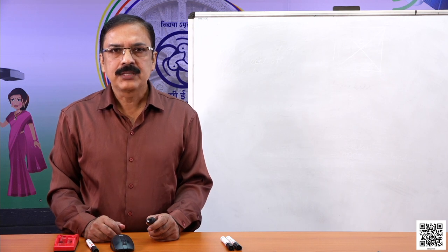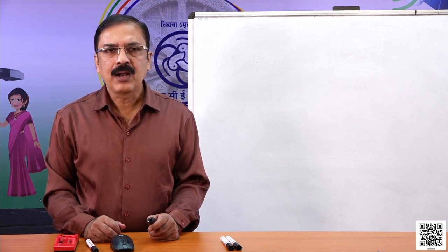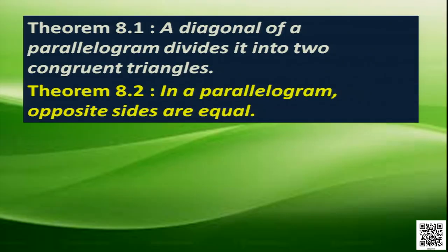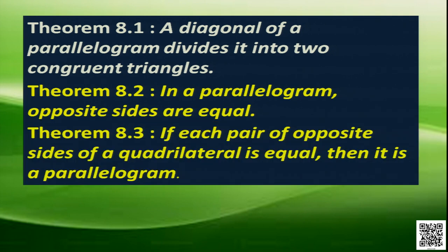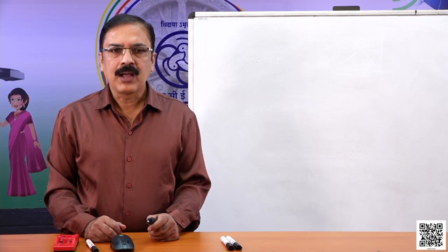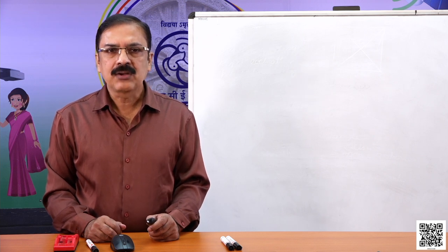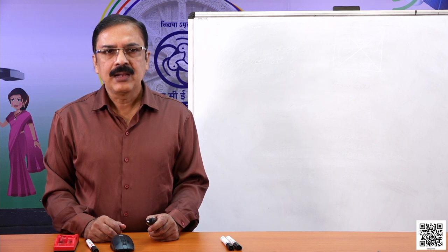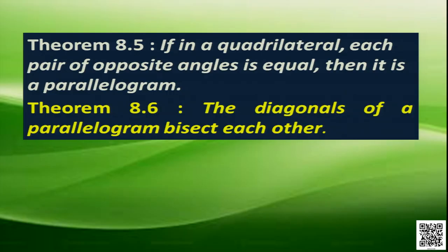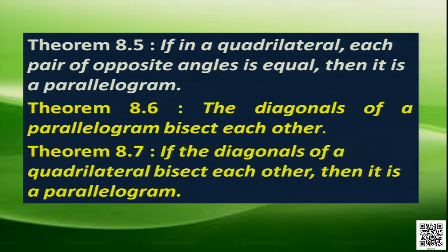We discussed that a diagonal of a parallelogram divides it into two congruent triangles. In a parallelogram, opposite sides are equal. If each pair of opposite sides of a quadrilateral is equal, then it is a parallelogram. In a parallelogram, opposite angles are equal, and its converse: if each pair of opposite angles is equal, then it is a parallelogram. We also discussed that the diagonals of a parallelogram bisect each other and its converse: if the diagonals of a quadrilateral bisect each other, then it is a parallelogram.